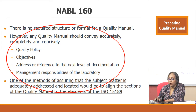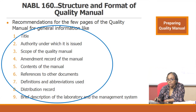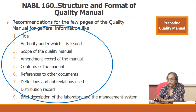NABL 160 says the quality manual should address nine elements: a title, authority under which it is issued, scope of the quality manual, amendment record, contents of the manual, references to other documents, definitions and abbreviations, distribution record, and a brief description of the laboratory management system. These are the general information pages you would put in a quality manual as you start writing it.